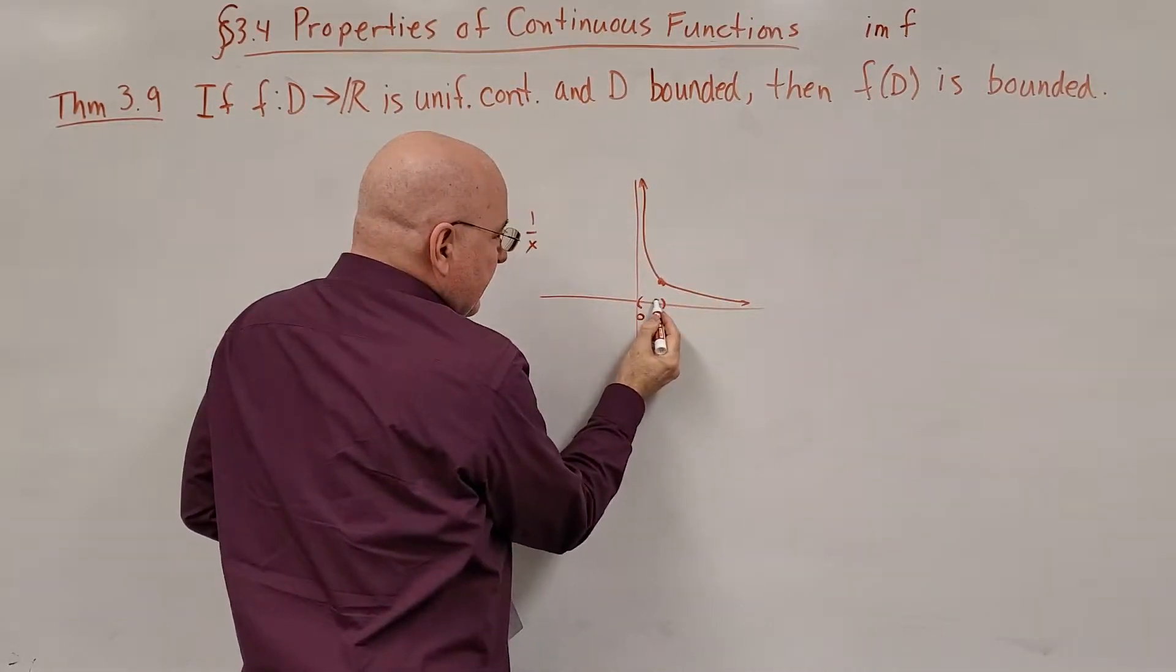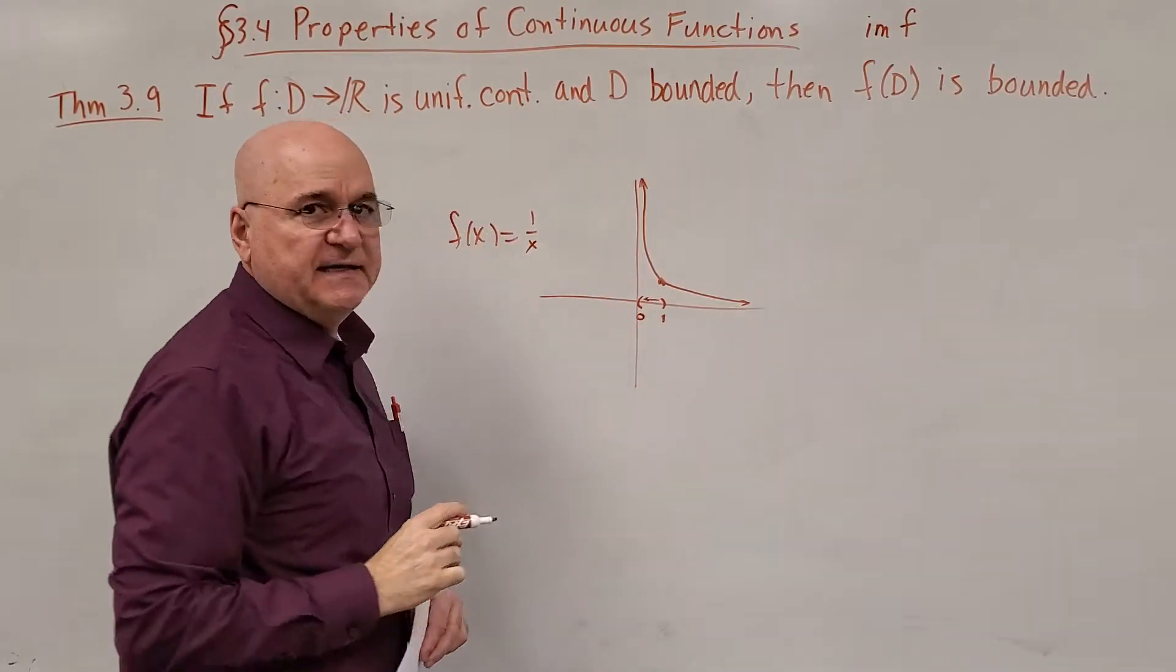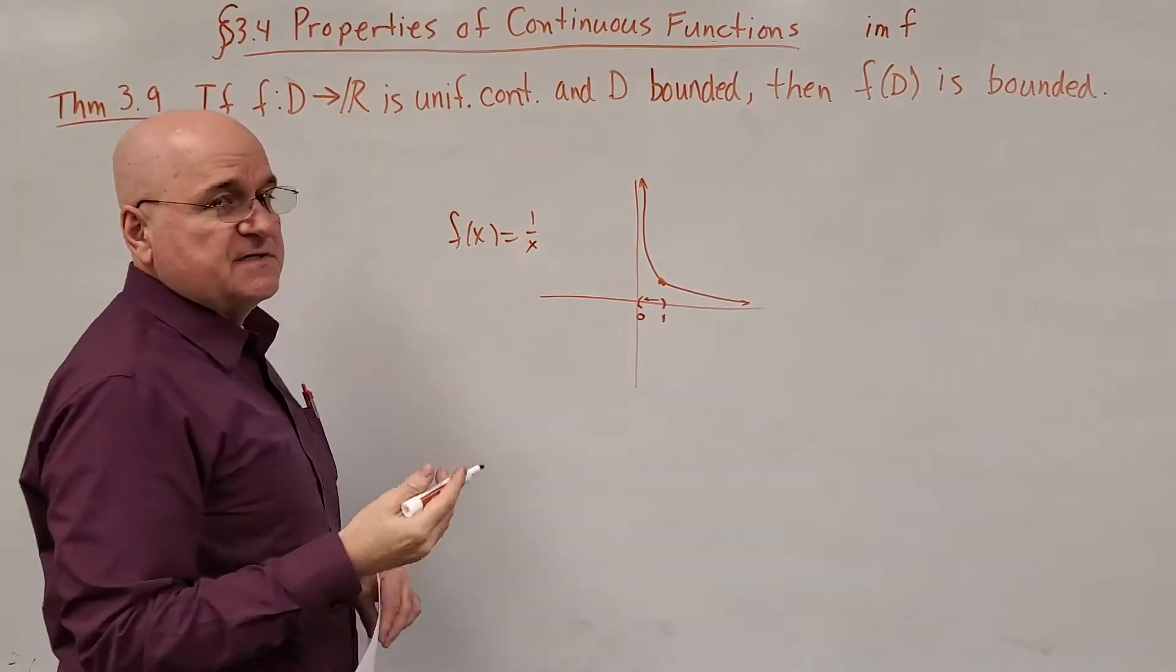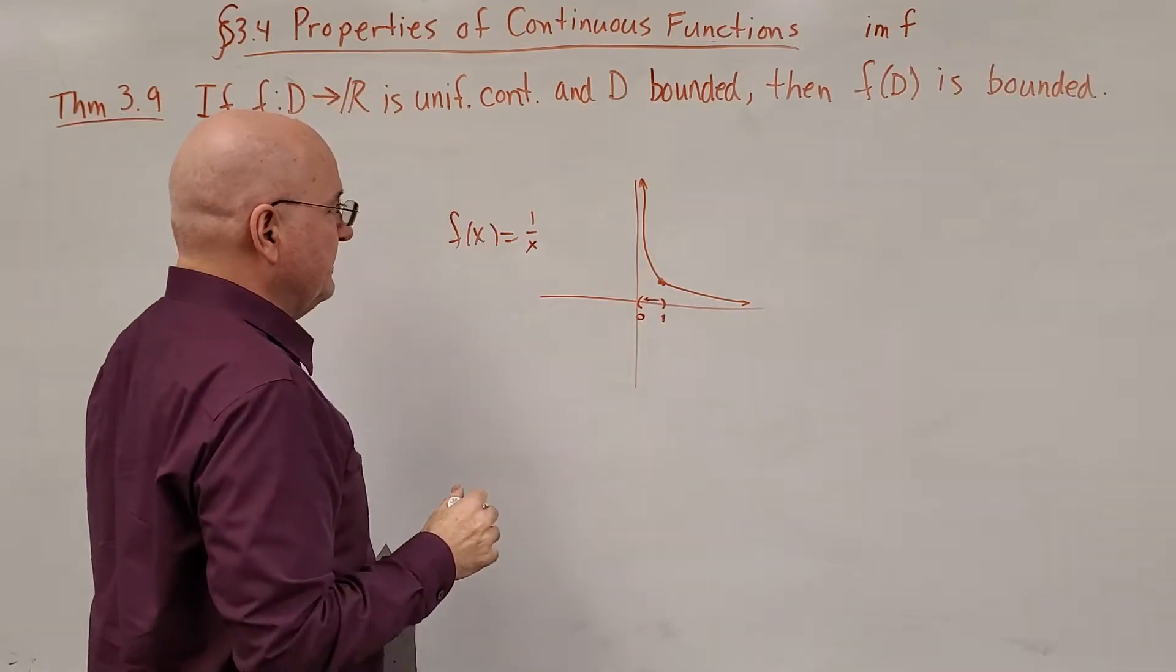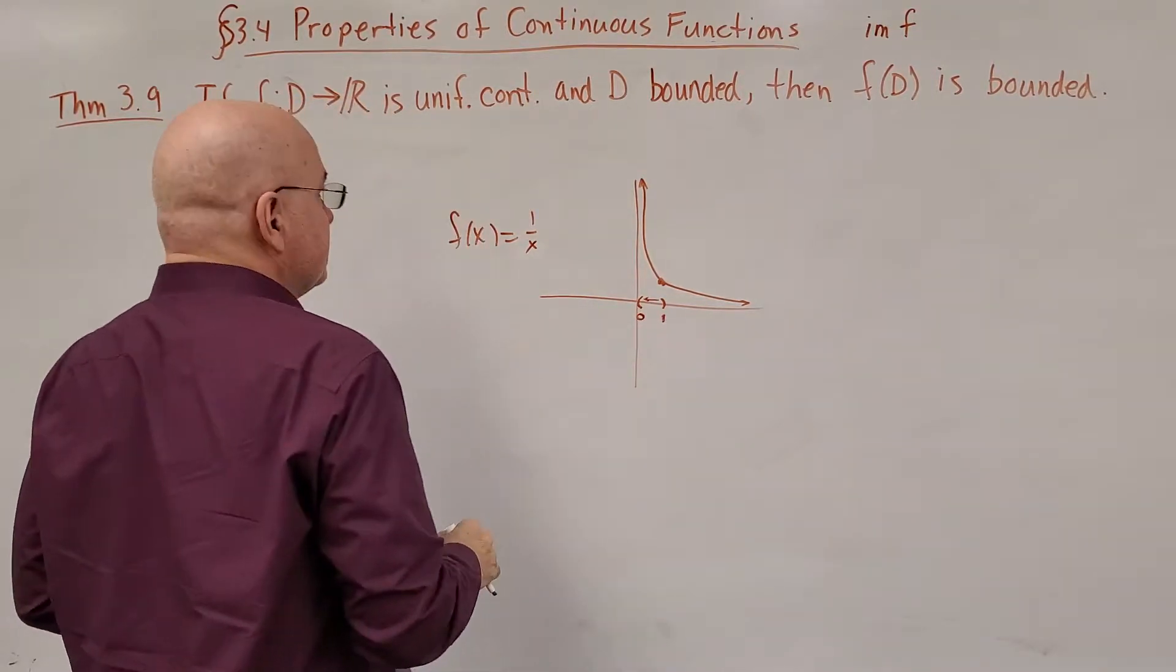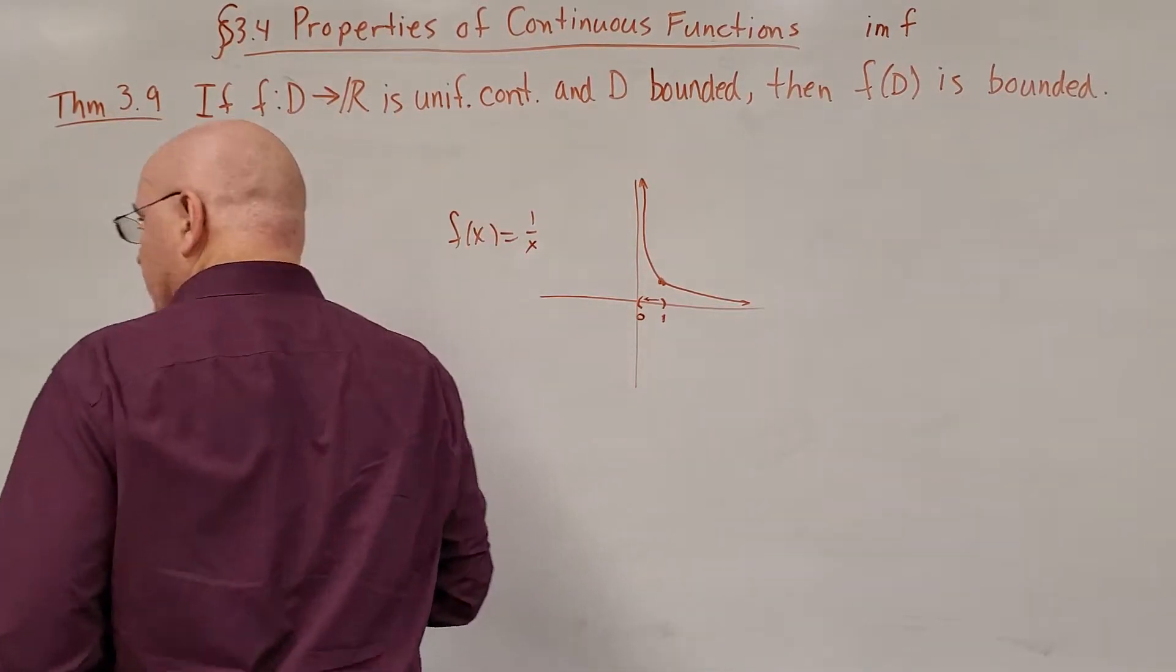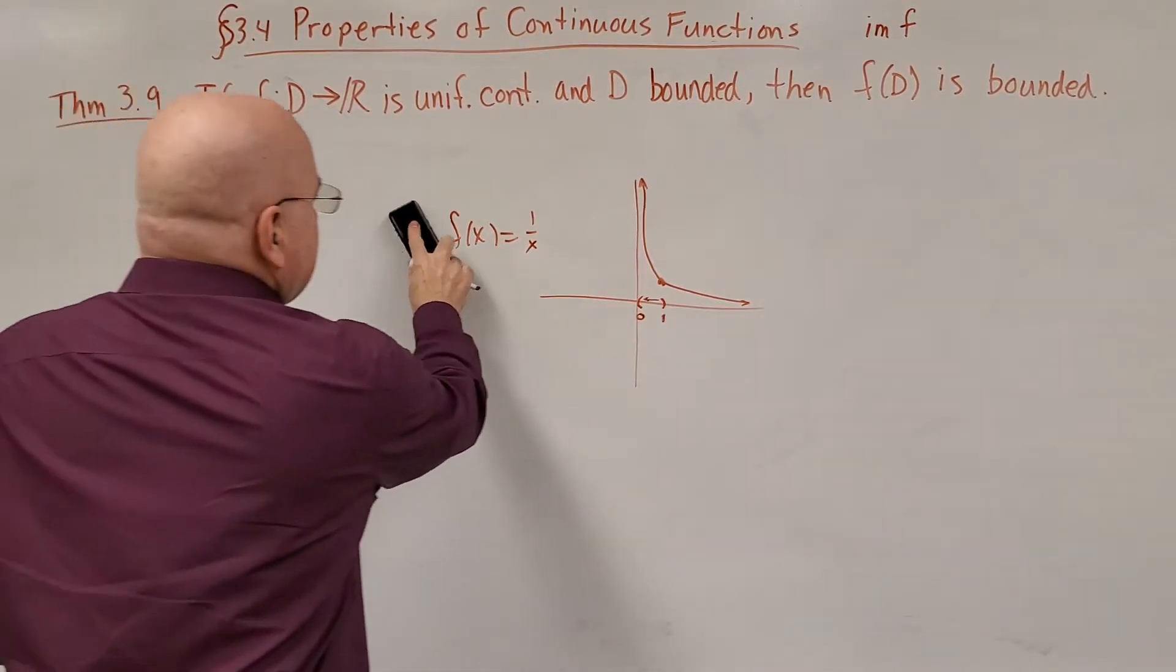As you can see, when x approaches 0 from the right-hand side, f(x) is blowing up to infinity. Therefore, this function is not uniformly continuous. We've already shown that this, in particular, function is not uniformly continuous. So we can't remove this word uniformly from the statement of the theorem.